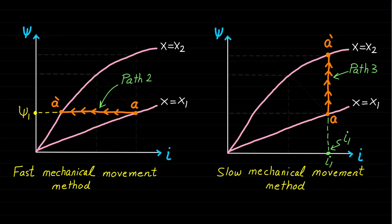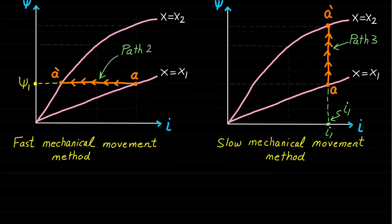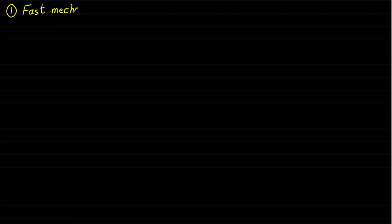Keep in mind that these two movements do not represent the actual movement of the relay system. However, these two paths are valid mathematically for deriving the mechanical force expression, as mentioned in the previous lecture. Now let's give more details about the first method and show how we can derive the mechanical force expression Fm in terms of the change of field energy dWf.